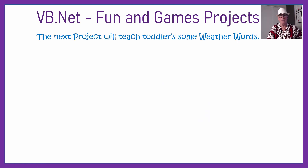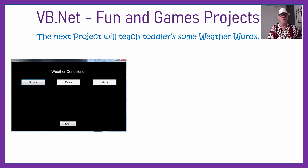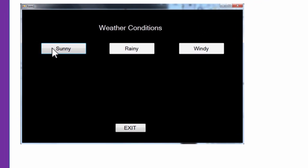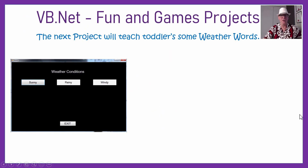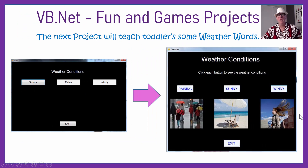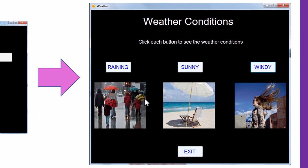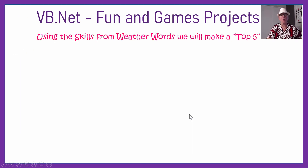The next project is going to teach some toddlers or kindergarten kids some weather words. There'll be options like they can pick the words sunny, rainy, or windy, and when they click on each of those it's going to show them a picture of that type of weather. So they can start associating — when you put your umbrella up and it's all wet, that's when it's raining. So that'll be a bit of a fun project.